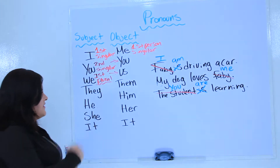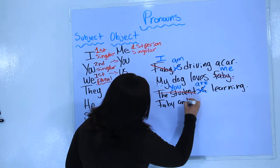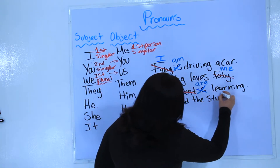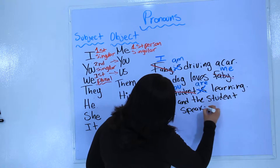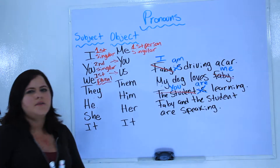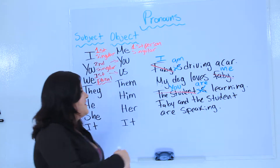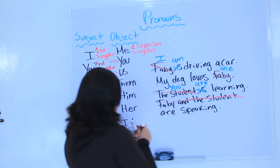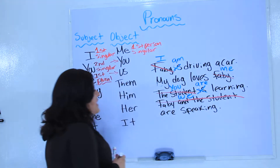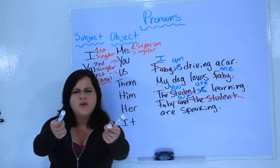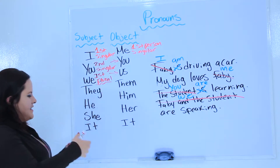For example, let's say Fabi and the student are speaking English. That means Fabi — me — and the student — you. So we would take this out and use we. We are speaking. Who? You and I. We are speaking. Yes, that is how we use that one.